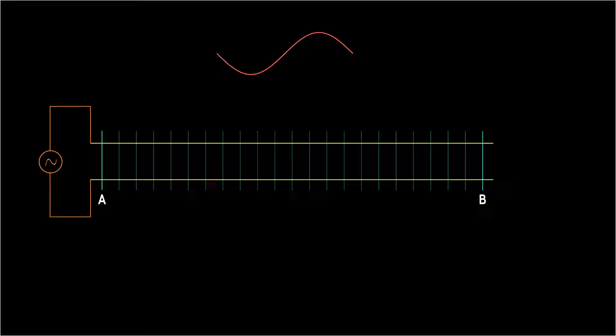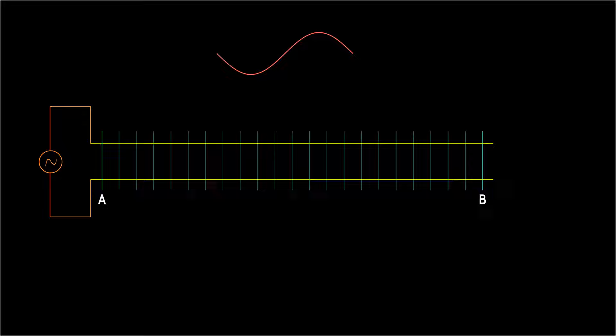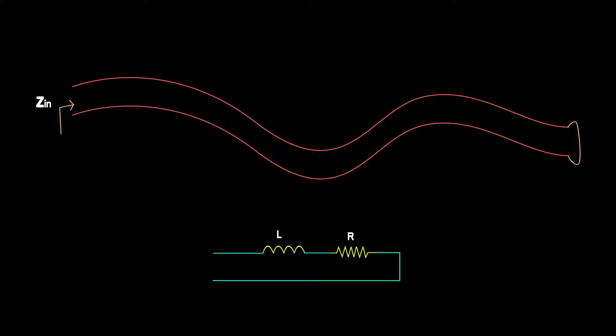Consider a transatlantic cable running from the US to Great Britain, a good example of uniform two-line transmission line. If we short the other end and measure the input impedance, it looks like a big inductor with series resistor modeling the wire losses.